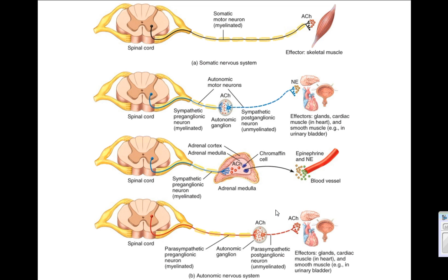I might also ask you which neurotransmitters are being released. Without knowing, your best guess is probably acetylcholine, because acetylcholine appears at almost every synapse. The only place that's different is with the sympathetic post-ganglionic neurons, which release norepinephrine, and the adrenal medulla, which releases epinephrine and norepinephrine into the blood as hormones.